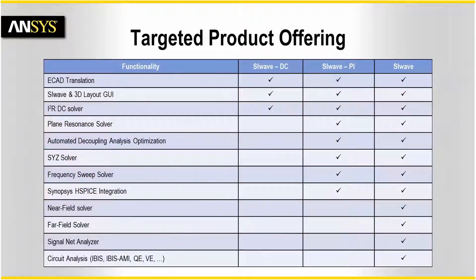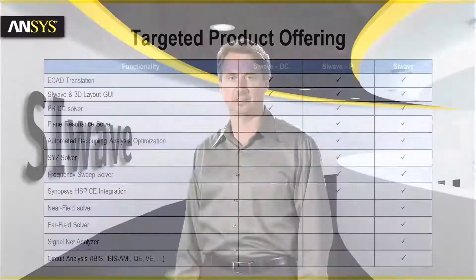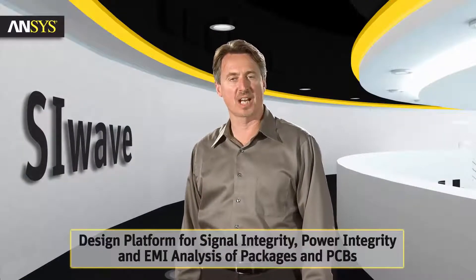SI-WAVE DC, SI-WAVE PI, and SI-WAVE deliver a complete set of targeted analysis capabilities that can be used throughout the PCB design flow to identify potential pre- and post-layout power integrity and signal integrity problems. Rely on ANSYS SI-WAVE — a design platform for SI, PI, and EMI analysis.